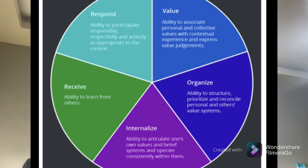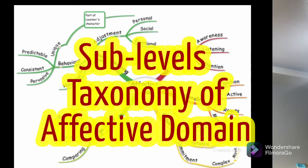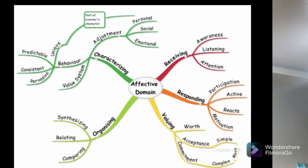These five levels have sub-levels. For example, in the first level — receiving — there are three sub-levels. The first is awareness: there must be an awareness of what he has to do, feel, or hear. After being aware, there must be a willingness to receive. And the third is controlled or selected attention.